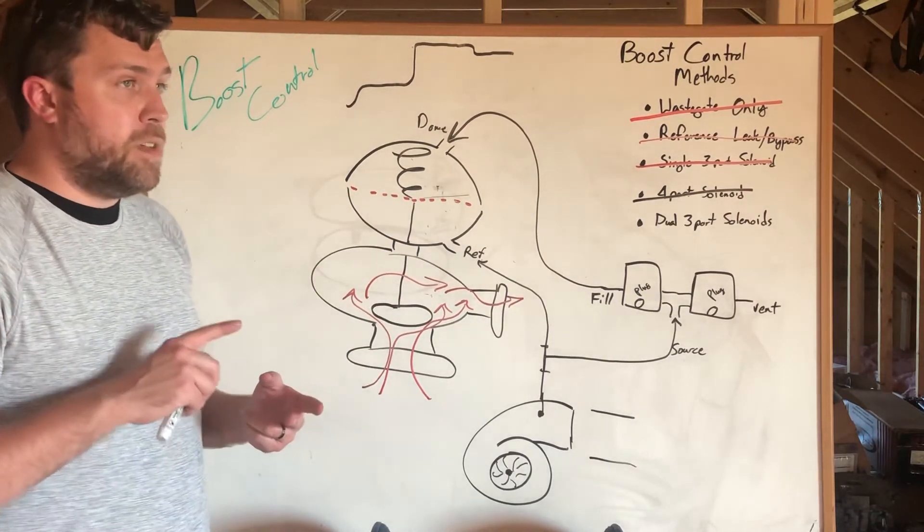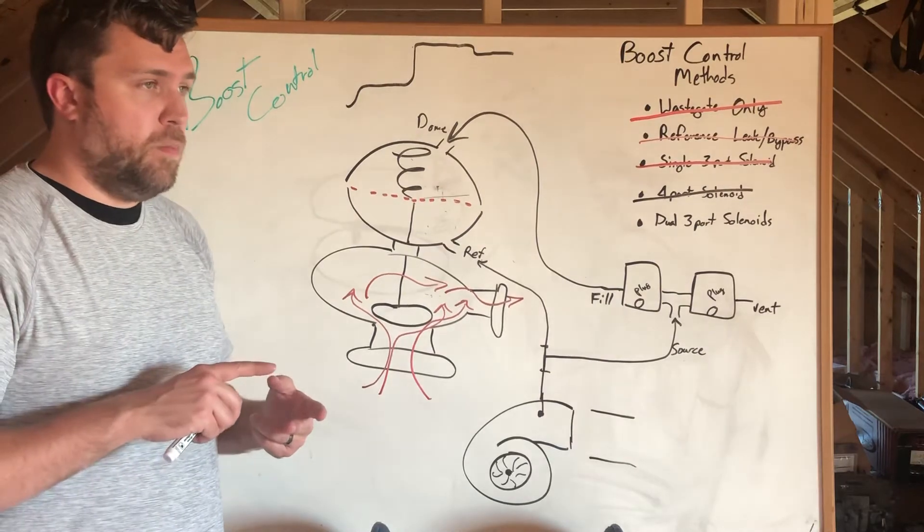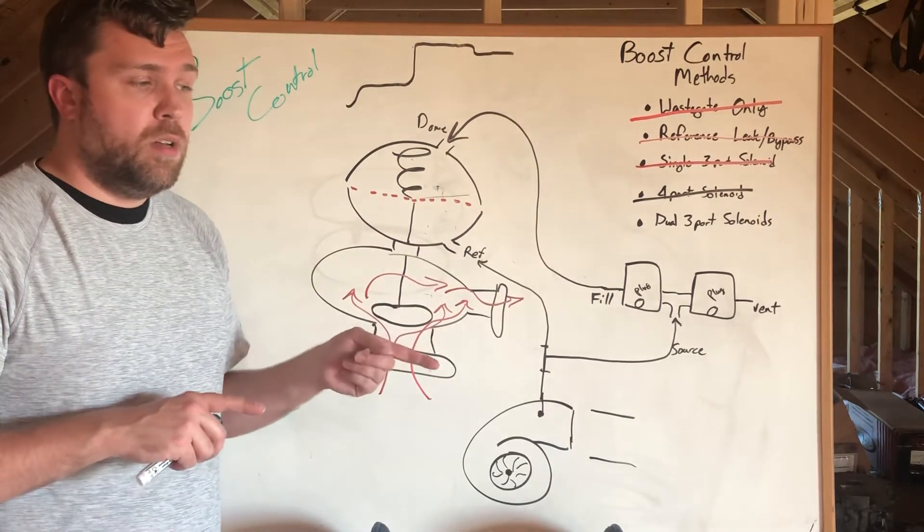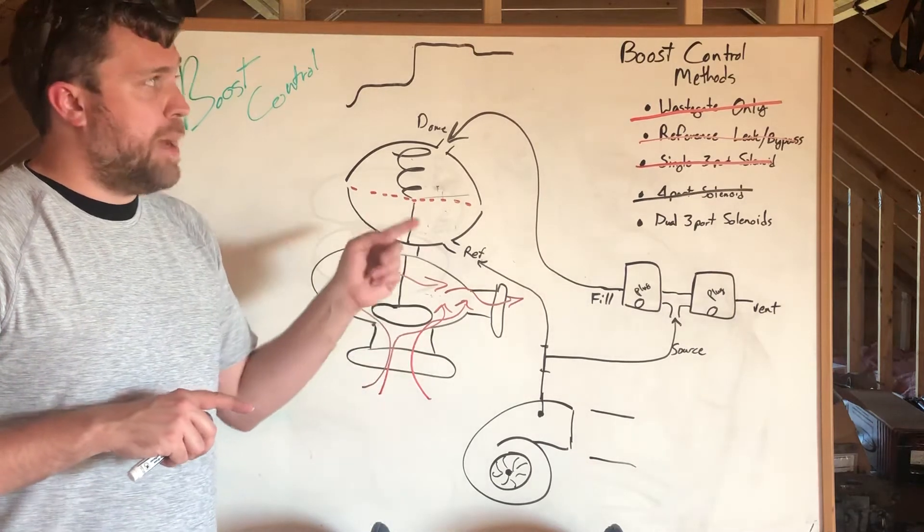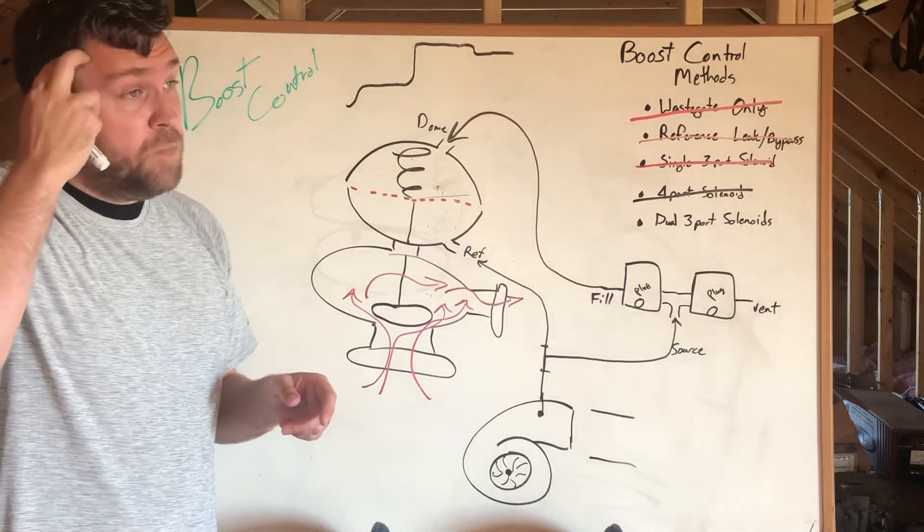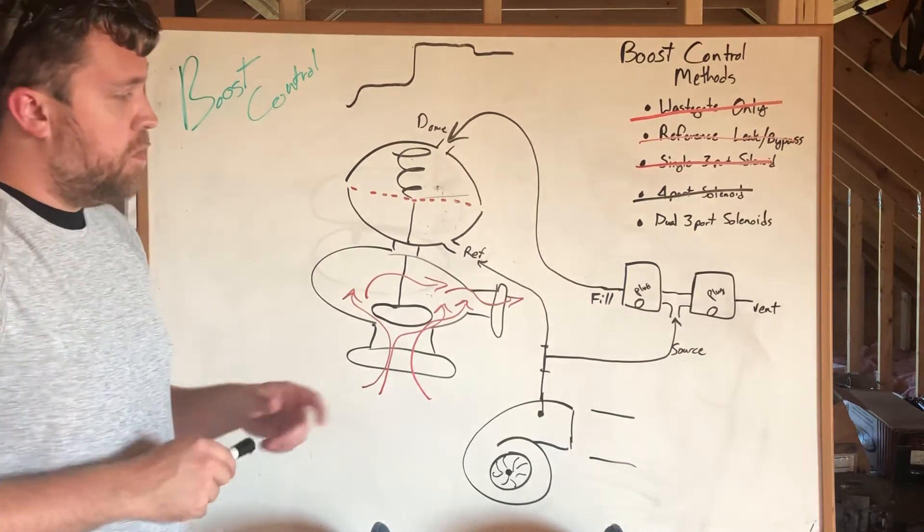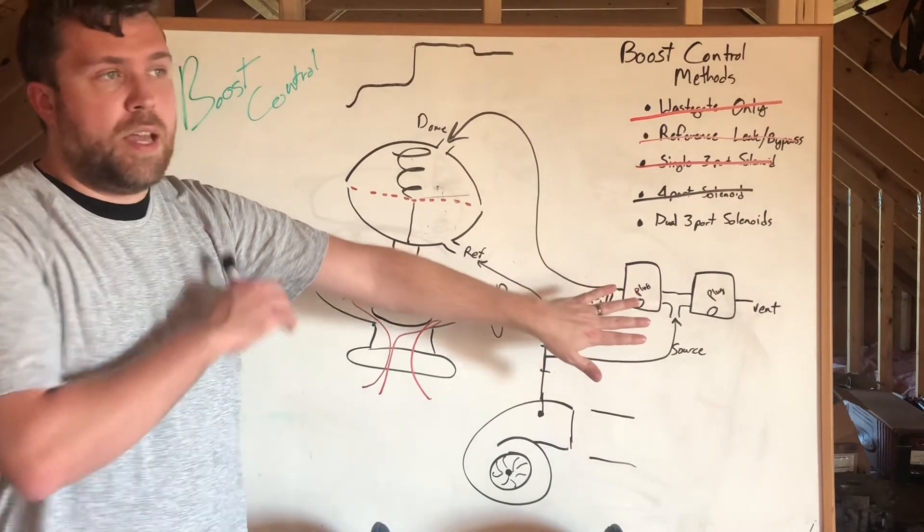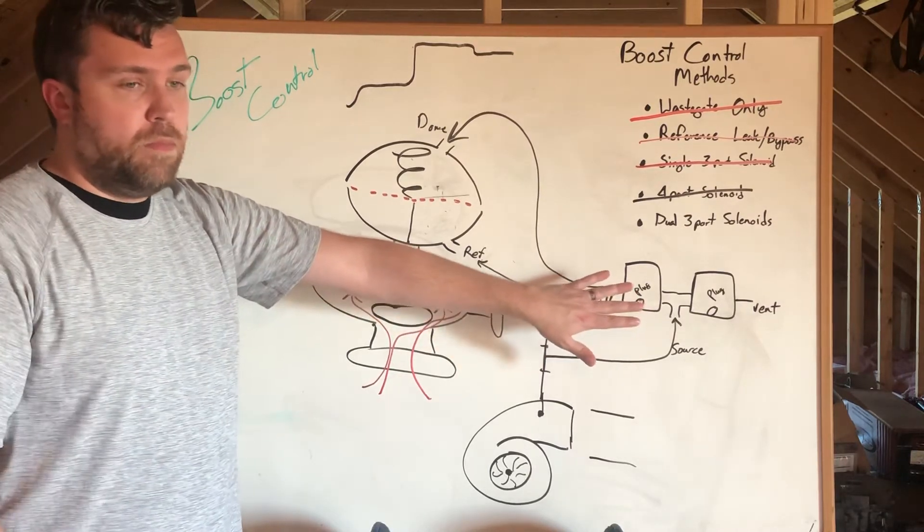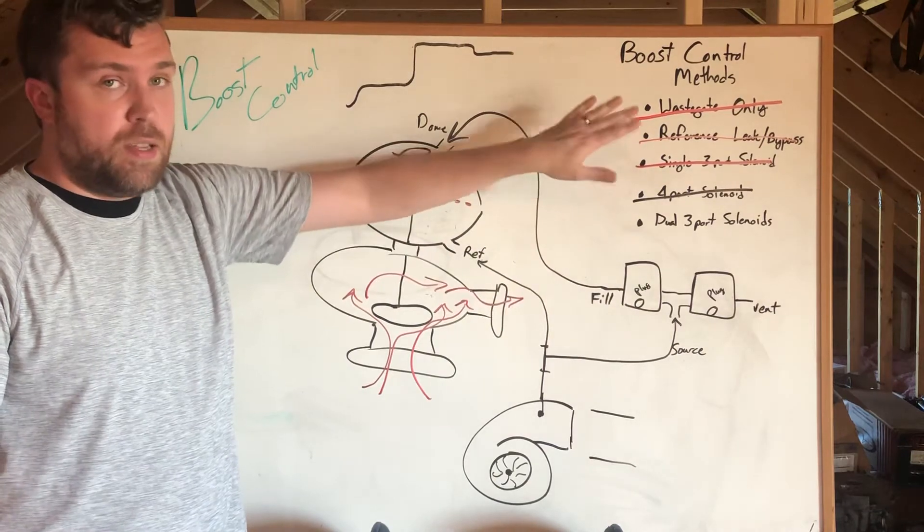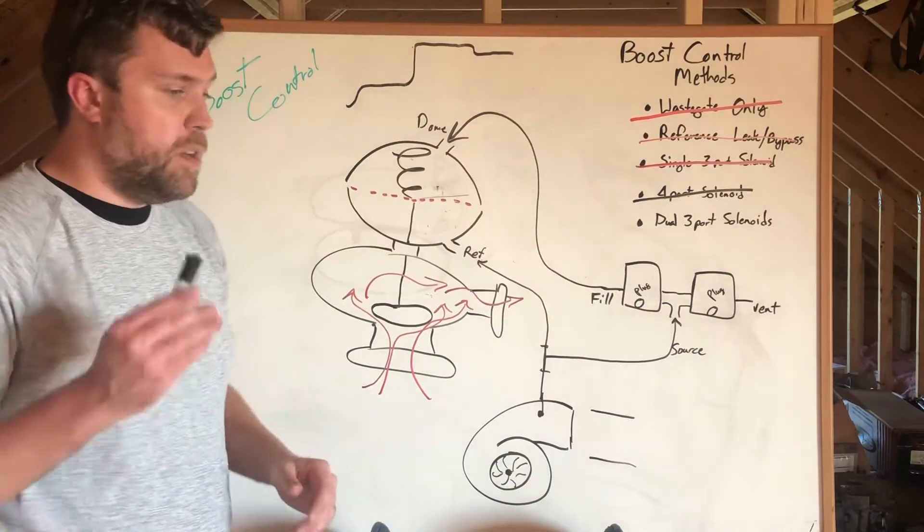I can set you up an advanced table to basically make this work like open loop using map based control, not burning an input. The way that I do that is we treat the fill solenoid just like we would treat a three port in a standard setup where we're going to command a duty cycle for a known target boost and then it's going to apply that to the dome.